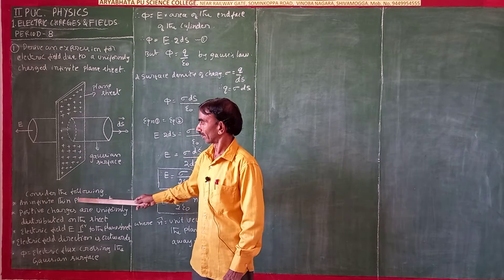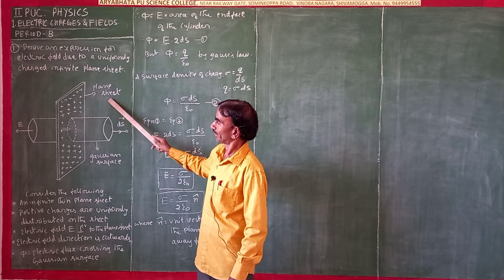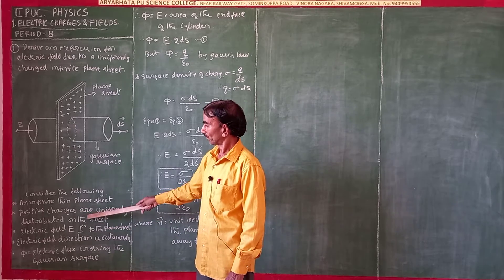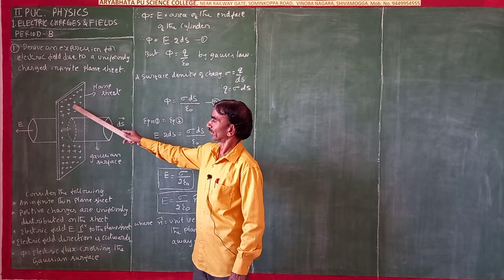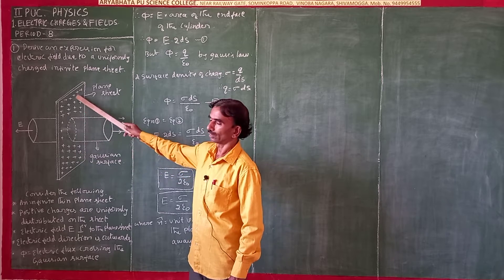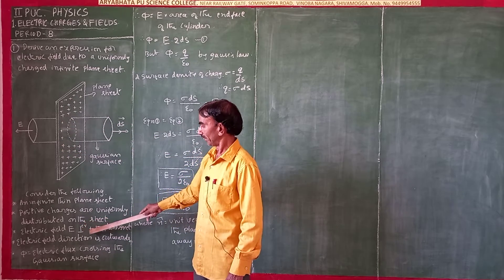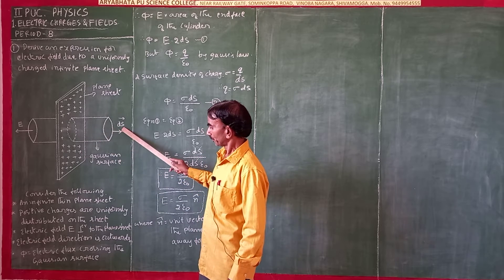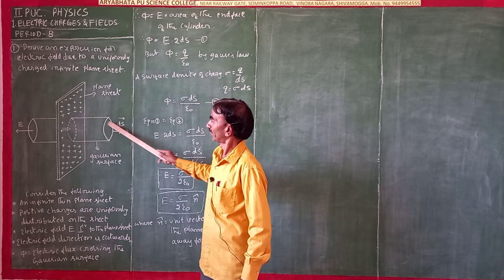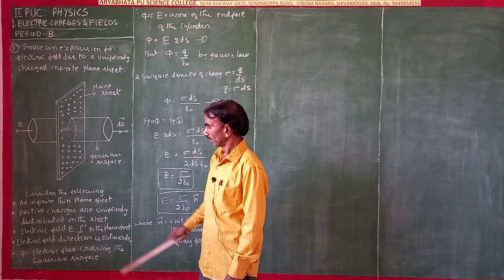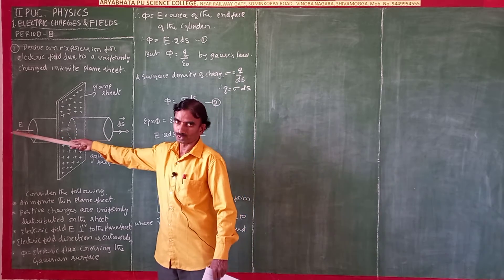Consider an infinite thin plane sheet. Positive charges are uniformly distributed on this sheet. The electric field E is perpendicular to the plane sheet, and the direction of the electric field is outwards.